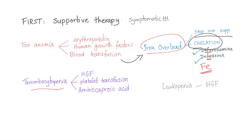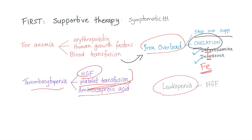For thrombocytopenia, give human growth factors for platelets, or platelet transfusion. If both fail, try aminocaproic acid. For leukopenia, give human growth factors for white blood cells.